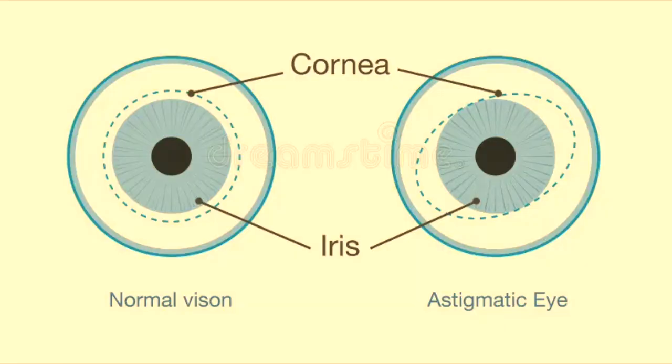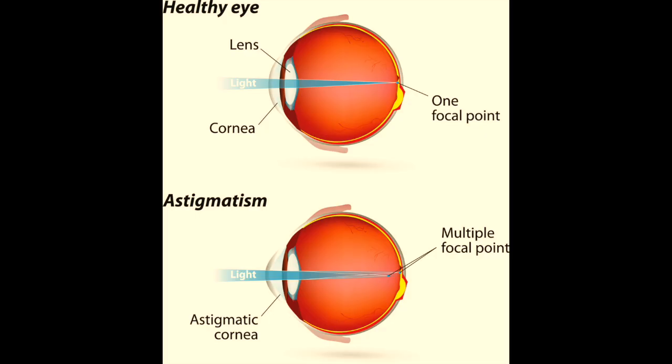Astigmatism. This condition occurs when the cornea is irregularly shaped, causing light to focus on multiple points instead of a single point on the retina. As a result, both near and distant objects may appear distorted or blurry.